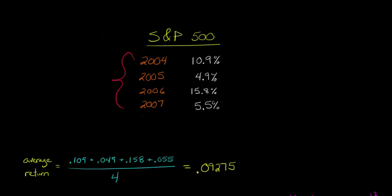So what we're going to do here is take each return. So 0.109 for 2004, 0.049 for 2005, etc. We're going to add them together in the numerator. So 0.109 plus 0.049 plus 0.158 plus 0.055, and we're going to divide that by 4, because there are 4 periods, 4 years here.